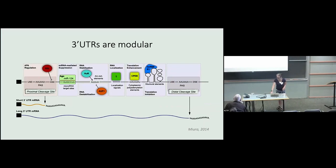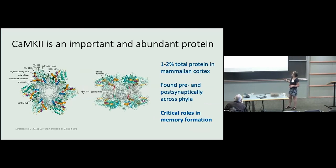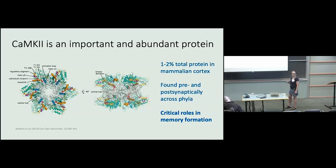I'm going to talk about the 3' UTR of my favorite enzyme, CaMKinase 2. This is a very important, very abundant, and actually very beautiful enzyme — it's a dodecamer, a dimer of hexamers. In the mammalian cortex, it's about one to two percent of total protein, which is rather astounding — up to the level of actin. It's found both pre- and post-synaptically in pretty much every organism, has critical roles in memory formation in every organism examined, and is a highly conserved protein. I'm going to talk about Drosophila CaMKinase 2, which is 75% identical and 90% homologous to human CaMKinase 2, and it also has translational regulation.